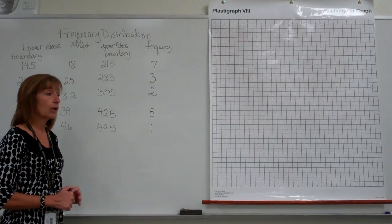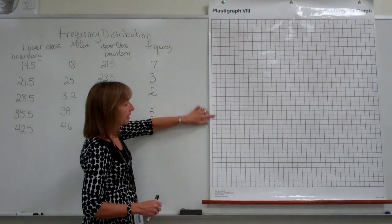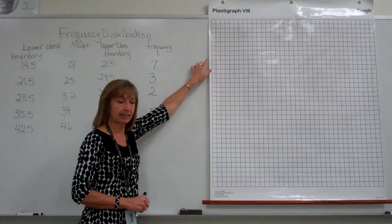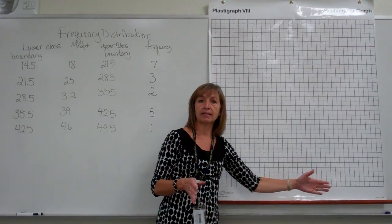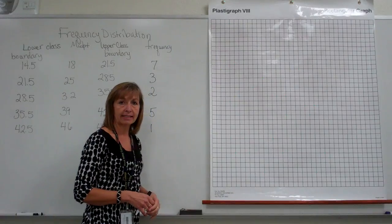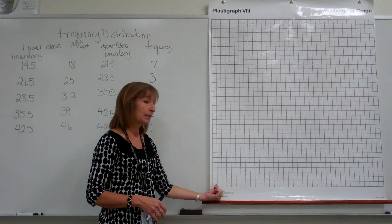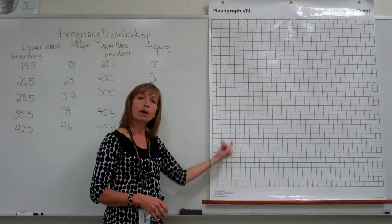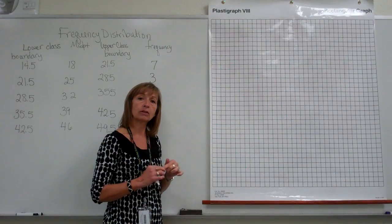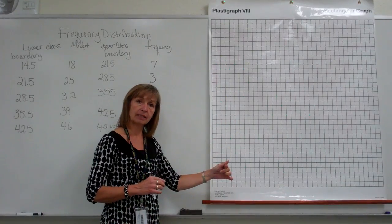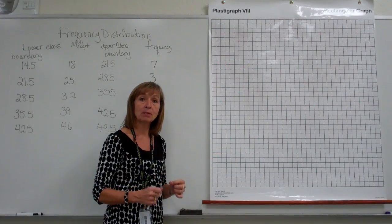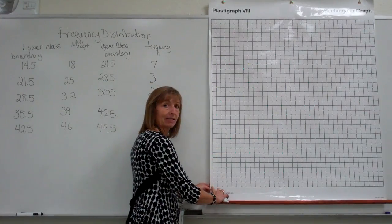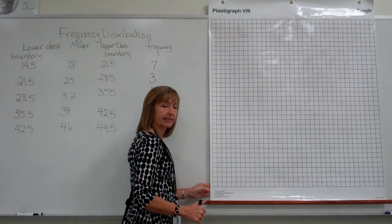Now with a histogram, we want the frequencies to be labeled along the vertical axis and we want the data value spans along the horizontal axis. You can either mark the beginning and the ends of the bars that you're going to create with the lower class limit and the upper class limit, or you can mark the middle of each bar that you make with the class midpoint. But you still want to think of that as a number line along the x-axis.